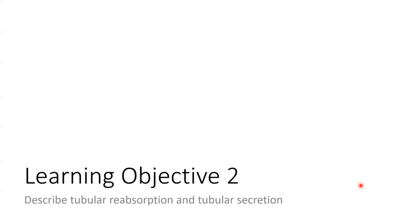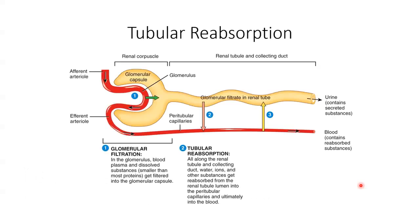The next step in urine formation is tubular reabsorption and secretion. Tubular reabsorption is when water and solutes in the filtrate are reabsorbed back into the blood in the peritubular capillaries and the vasa recta. We've had substances filtered out of the glomerulus into the Bowman's capsule, moved into the tubules, and now we take them out of the tubules and put them back into the blood — the things the body wants and doesn't want excreted as urine.